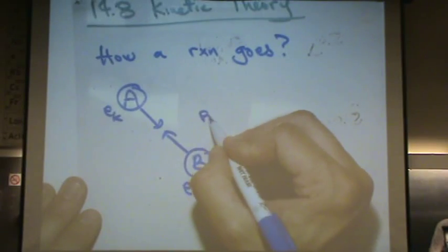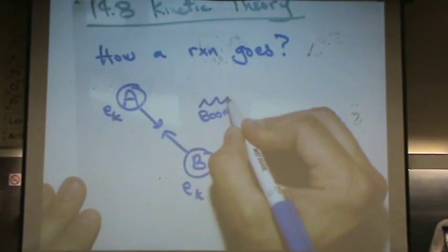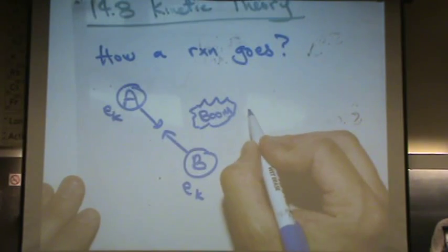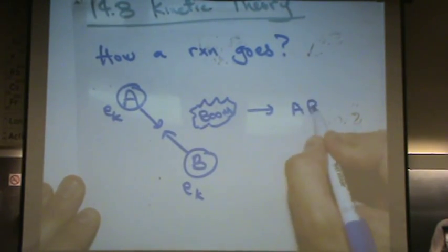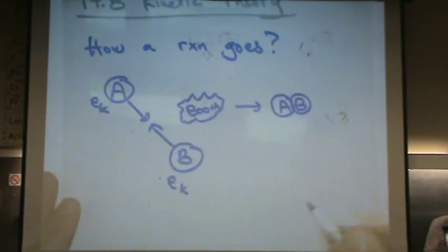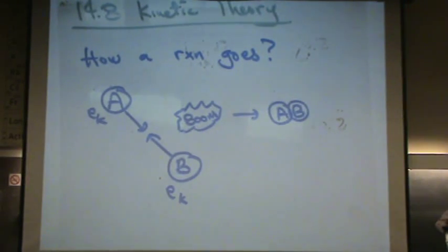And boom, there are some interaction, maybe energy is released. And you have AB forming. That's like the simple way.